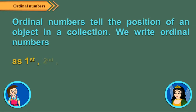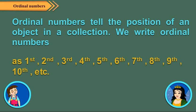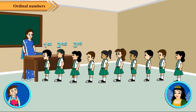Ordinal numbers are used to tell the position of an object in a collection. In this picture, observe the position of the children.